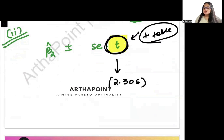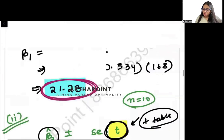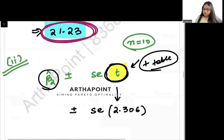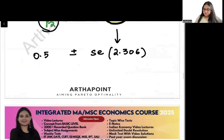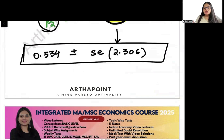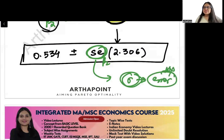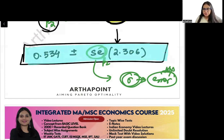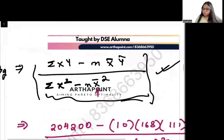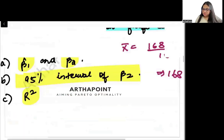So the confidence interval is: 0.534 plus or minus 2.306 times the standard error of beta_2 hat. However, since the variance of the error term is not given in the question, we cannot compute the standard error, so we leave the answer at this stage. That is where this part of the question ends.